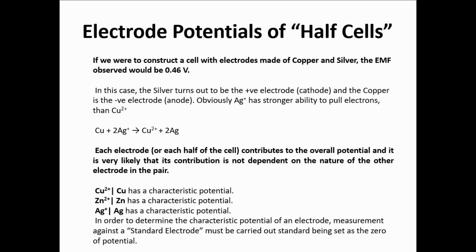In this setup, silver turns out to be the positive electrode, which is the cathode, and copper turns out to be the negative electrode, which is the anode. This is because silver has a stronger ability to attract or accept electrons versus copper. The overall cell reaction is where copper gets oxidized — changing from Cu⁰ to Cu²⁺ — and Ag⁺ is reduced to Ag⁰. We want to go deeper into this and understand which reaction will have reduction, which will have oxidation, and also to calculate the cell potential.